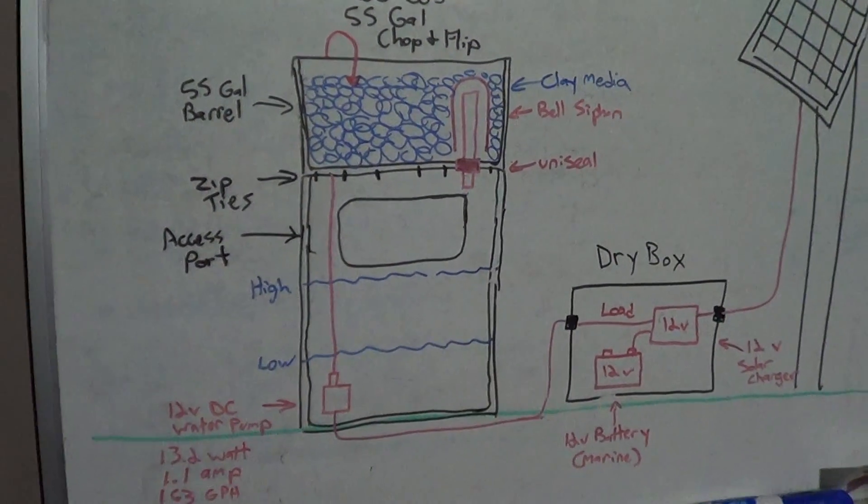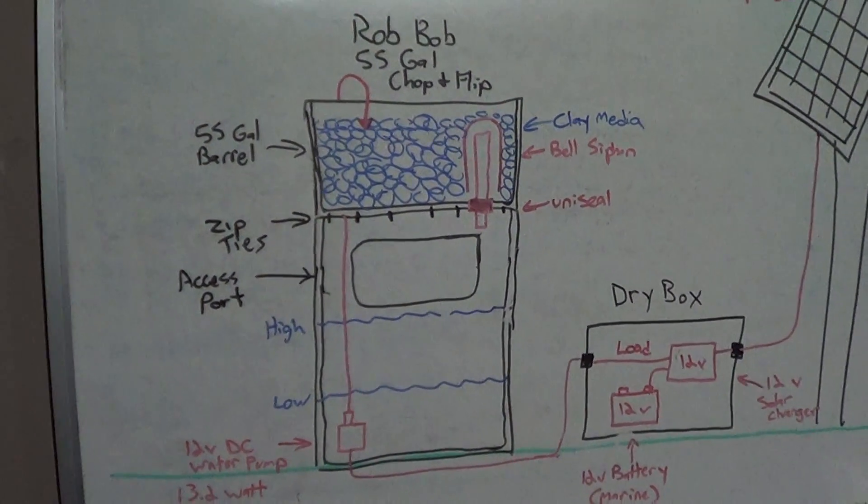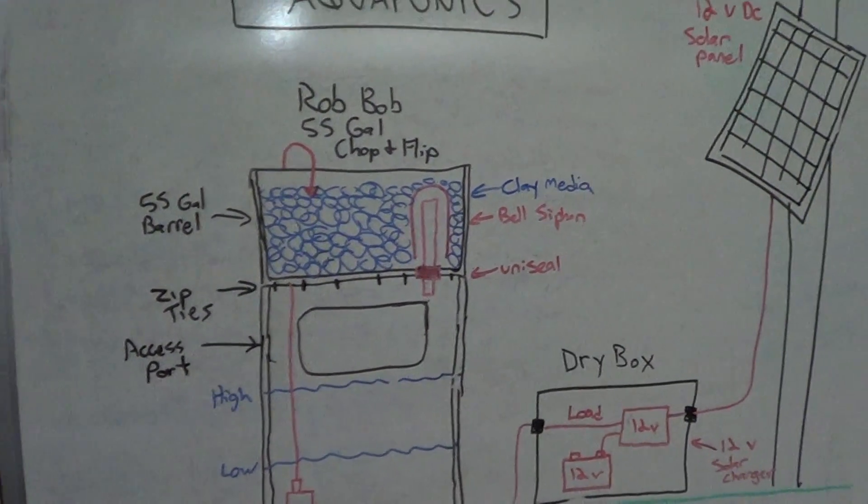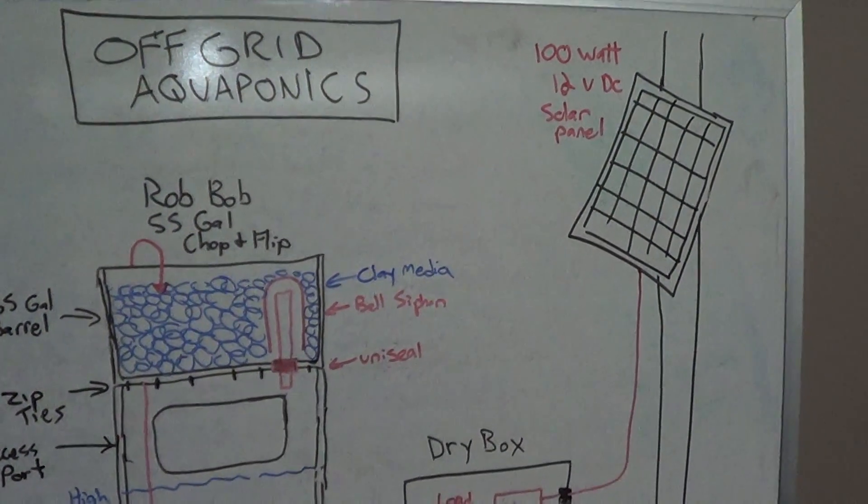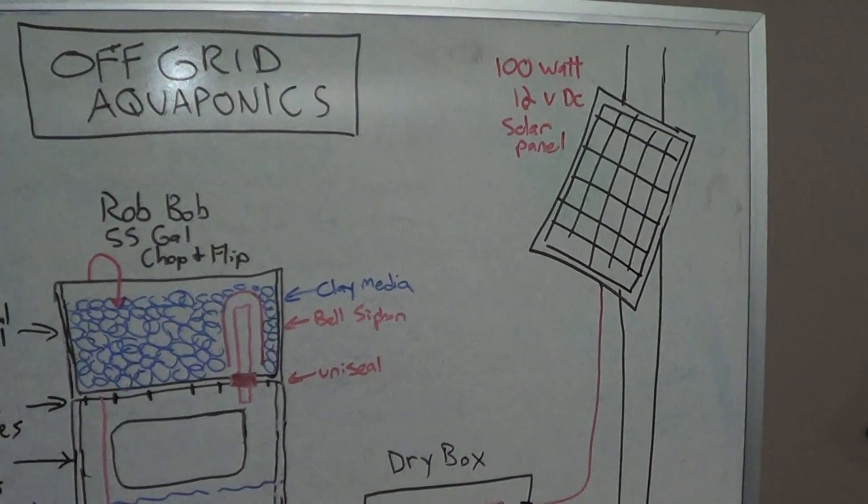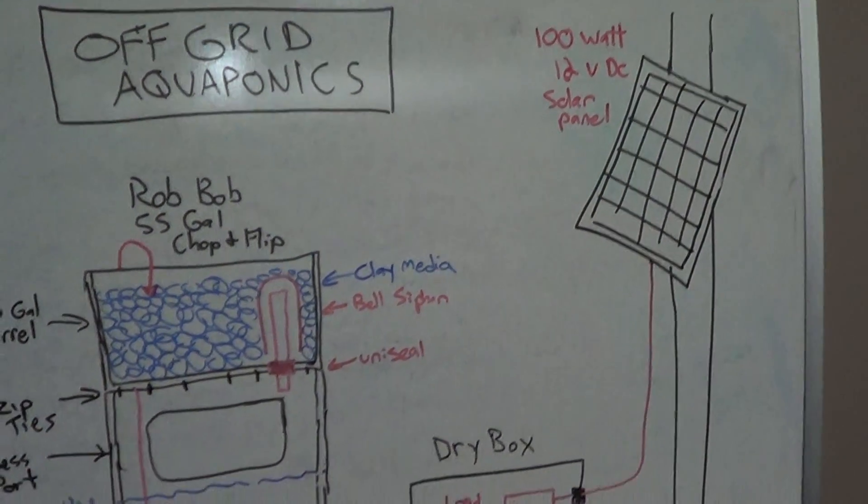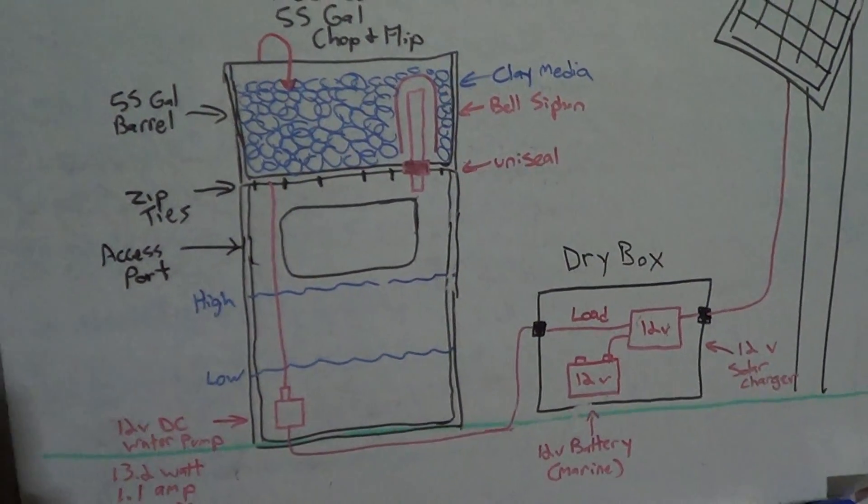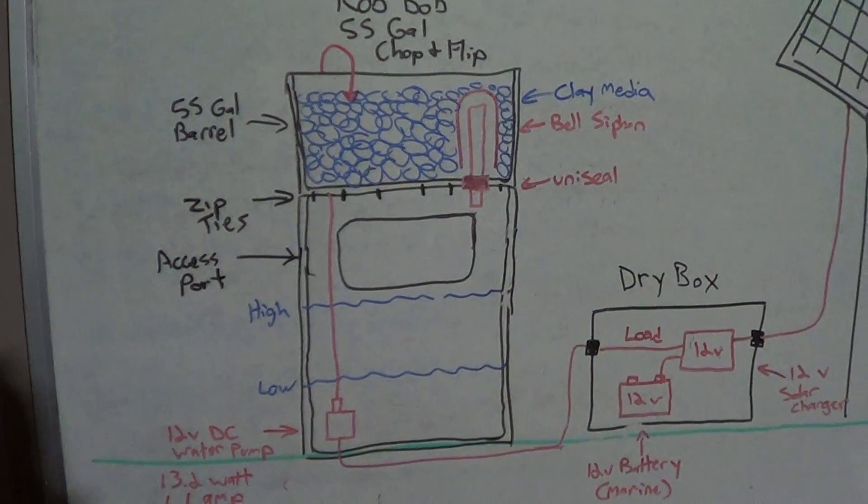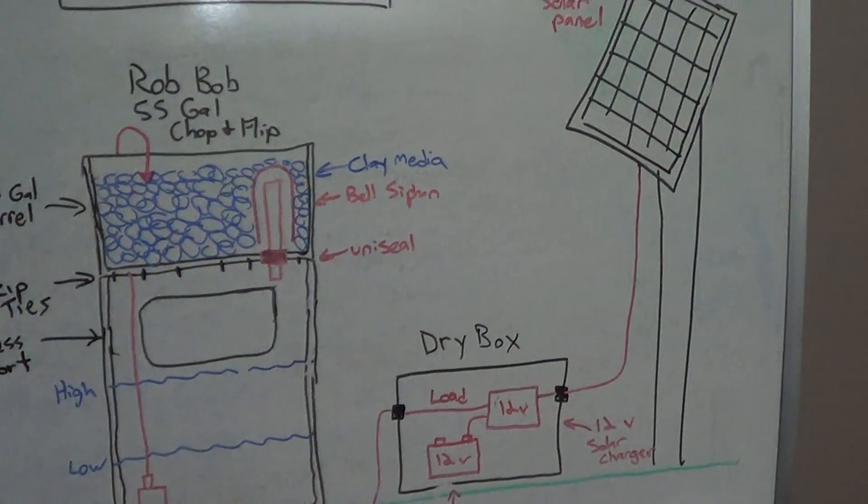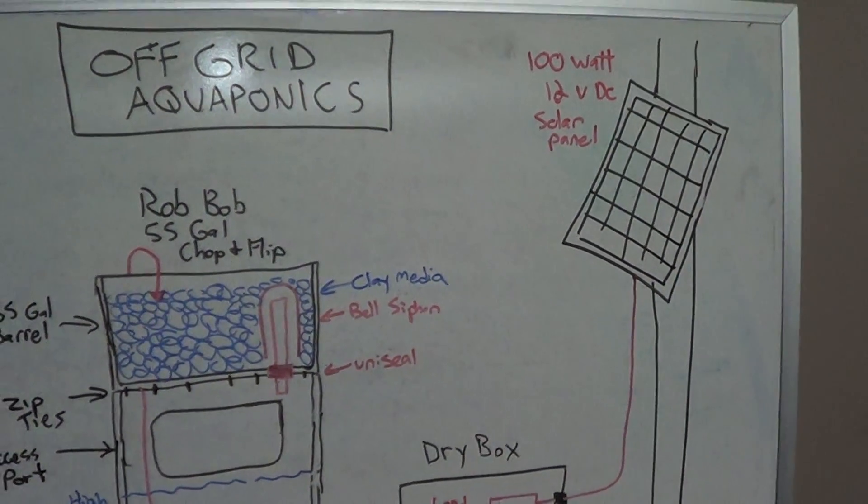Now the goal of this is not to grow a large volume of vegetables. It's really to act as a prototype for potentially a larger system down the road. So everything here is as minimal as possible while still proving out the proof of concept.